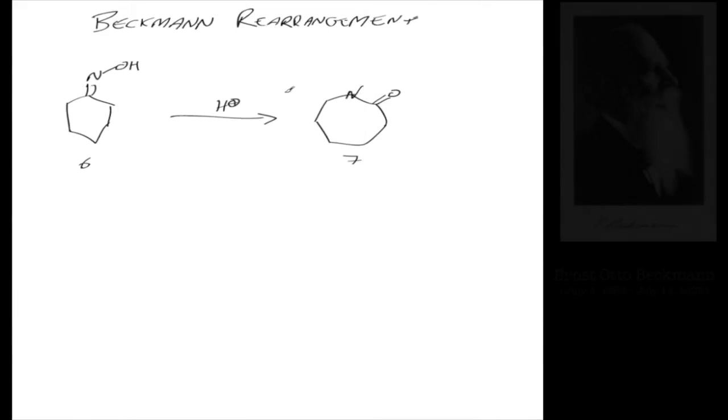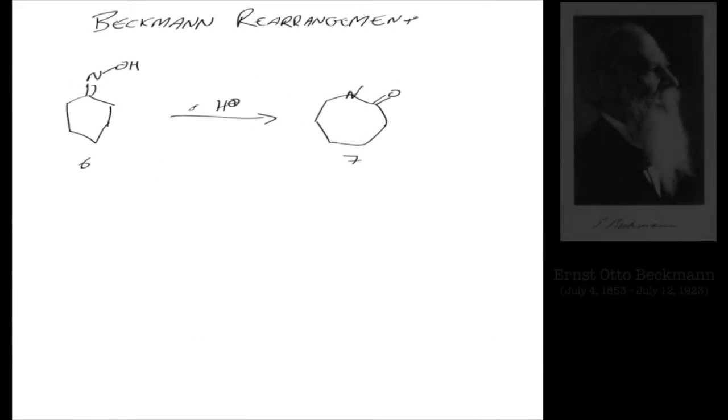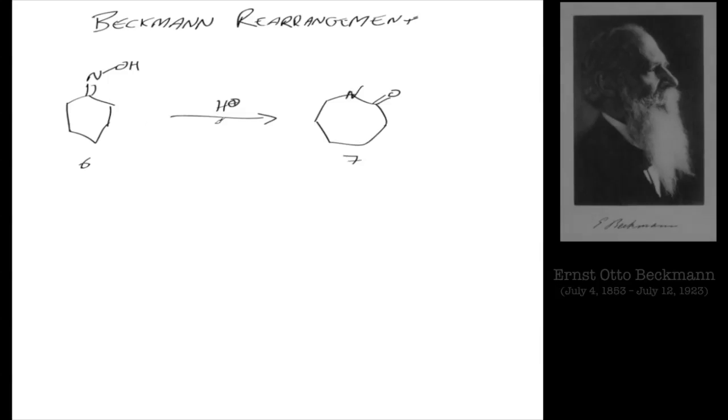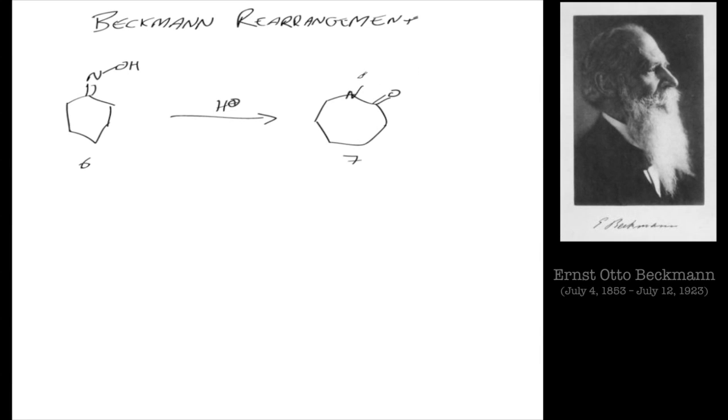Okay, we're just going to go over the Beckman rearrangement. The Beckman rearrangement is the rearrangement of an oxime into an amide. As you can see in this particular example, it gives us a seven-membered ring because we started off with a six-membered ring. So we could imagine, if you remember the retrosynthesis, probably making this.